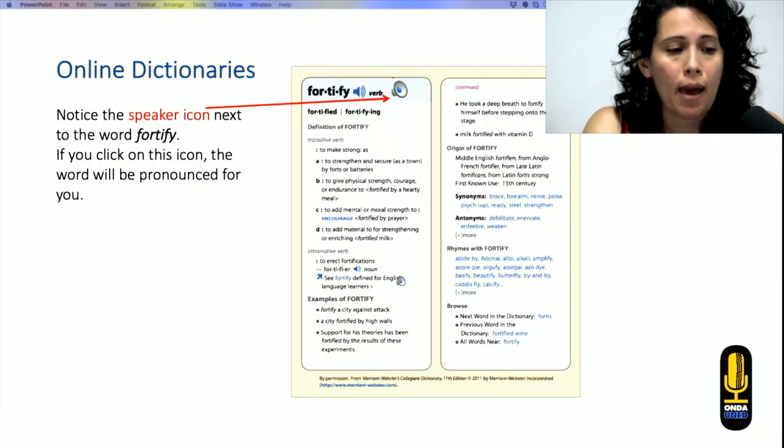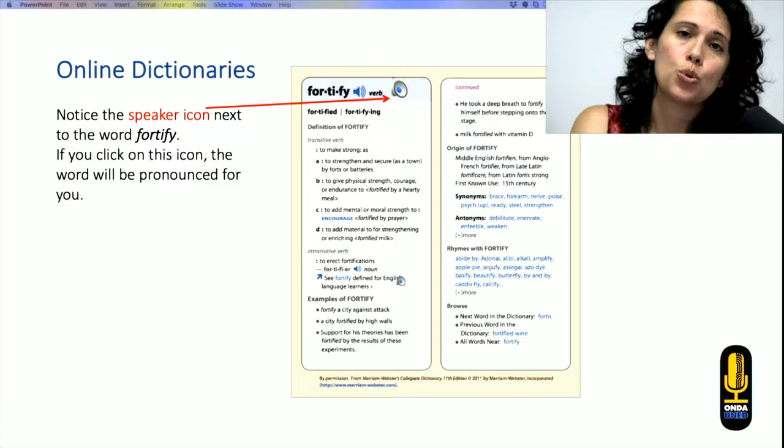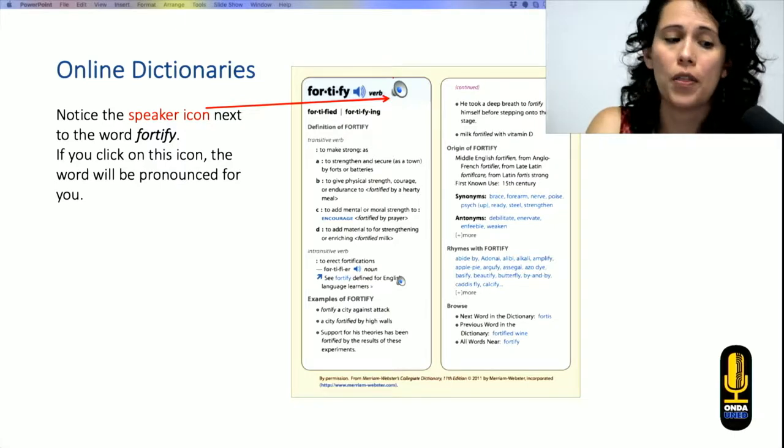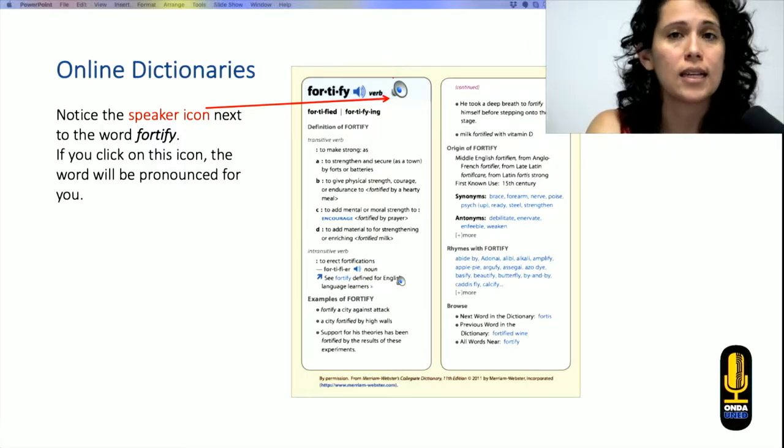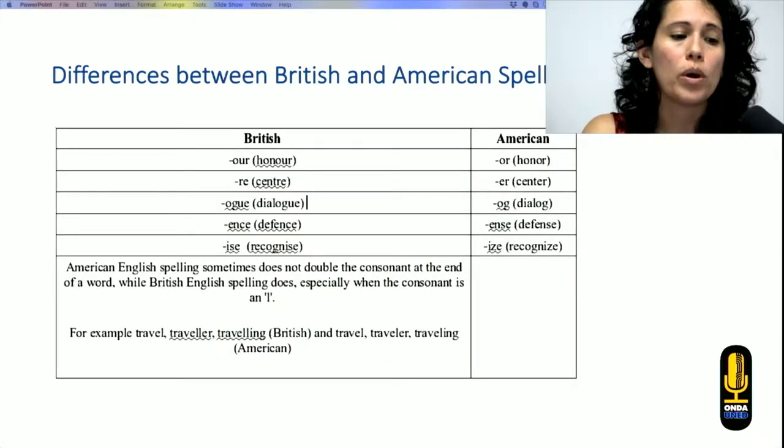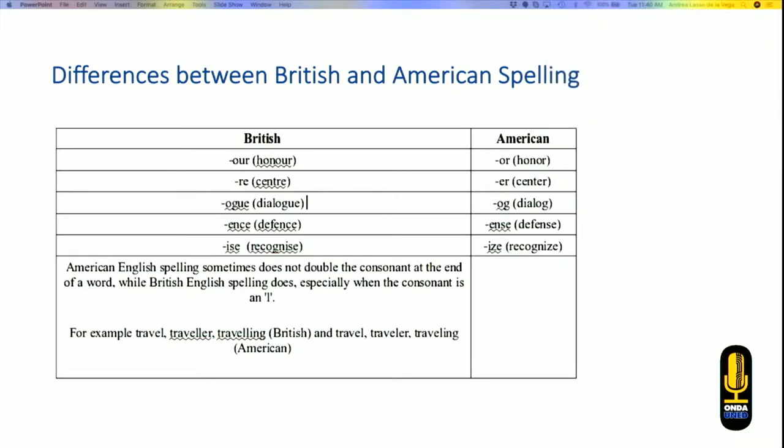Fortunately, right now, we have access to online dictionaries. So this is a great advantage, because we can even just click on the speaker icon, and you will get the correct pronunciation. Something that you will find is that we might find British and American pronunciation. This isn't a mistake. It's important that you know you could find both of them, and be open to this possibility in different texts. So if you see a word written in a different way, it might be written in British or in American English.